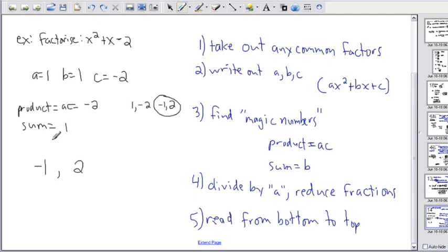So continuing on here we had found our magic numbers which are negative 1 and 2. Those are two numbers that multiplied to negative 1, but also added up to positive 1. So I found those.